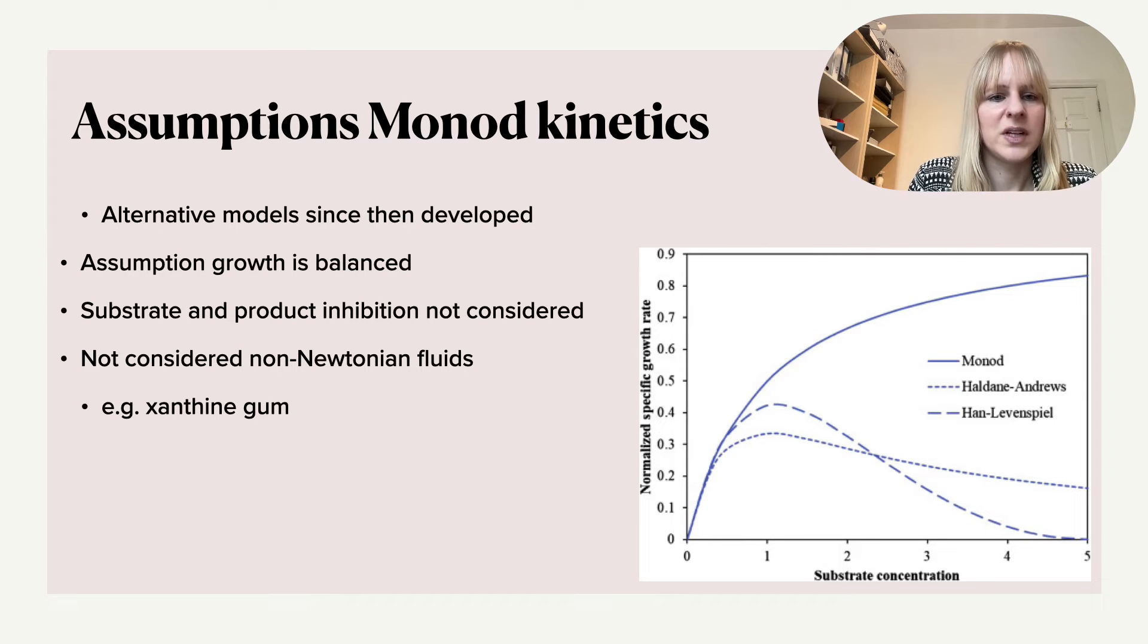So if you look at Monod kinetics, one of the main things that you can see is that depending on the substrate concentration the normalized specific growth rate will always increase. And I think inherently when you think about it, you know and even this when you look at enzymes, the more you tend to get of it there's always some kind of inherent inhibition. And so there are some other models like Haldane-Andrews and Han-Levenspiel who take this inhibition into account.